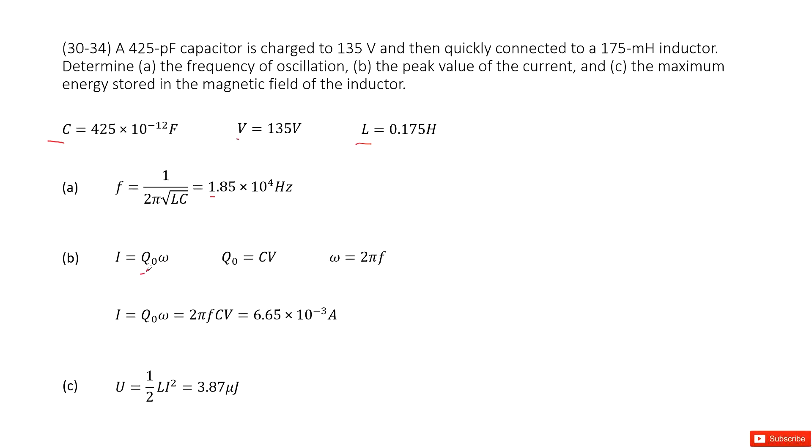And the maximum Q₀ is the charge initially. So we can write it as C times V. Now we input Q₀ and omega in this equation. We get the function for I in V and f. So we input f and V inside, get the answer there.